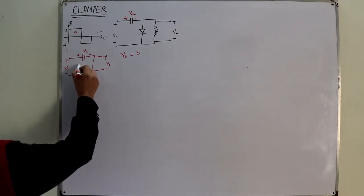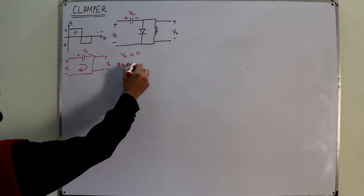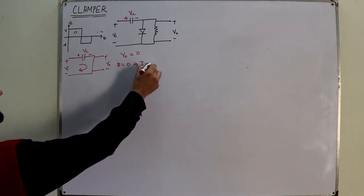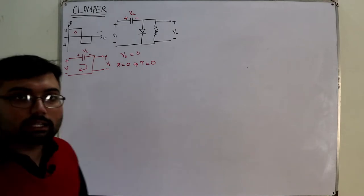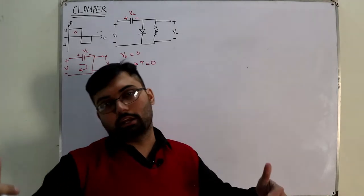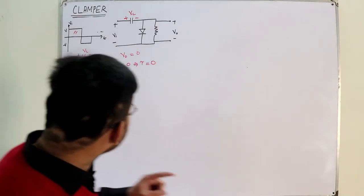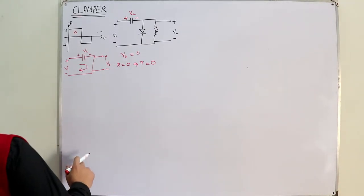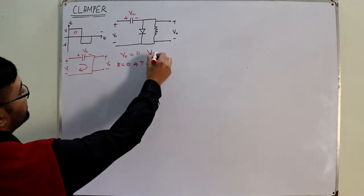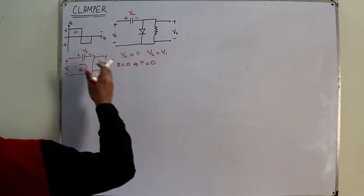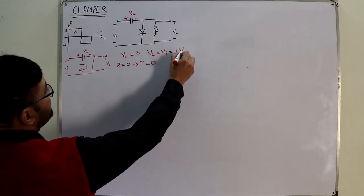The current flows this way. R is 0 — no resistance. So this implies that tau is 0, which means that the time constant is 0, which means that the capacitor has charged instantaneously — no time taken by the capacitor to reach the maximum value. So the voltage across the capacitor in this case is V input. And what is V input in this case? A plus V, which is equal to plus V.